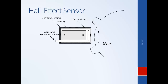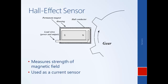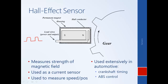Another type of sensor that doesn't work on quite the same principle as a resolver or LVDT is called a Hall effect sensor. It can be used to measure the strength of a magnetic field, and since current generates a magnetic field, it can be used as a current sensor. It can also be used to measure speed or position. For example, imagine a gear spinning — as its teeth pass the Hall effect sensor, the teeth change the magnetic field, and that change in magnetic field can be detected by the sensor. You get pulses every time a tooth passes by, which can be used to measure speed or position — for example, for crankshaft timing or anti-lock brake control.